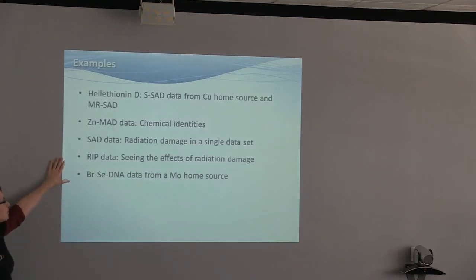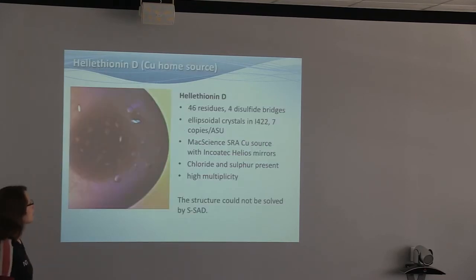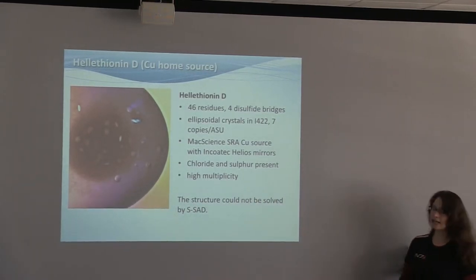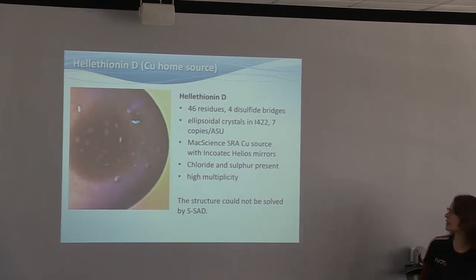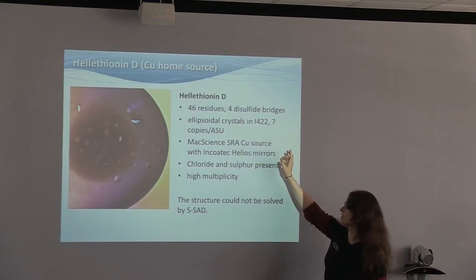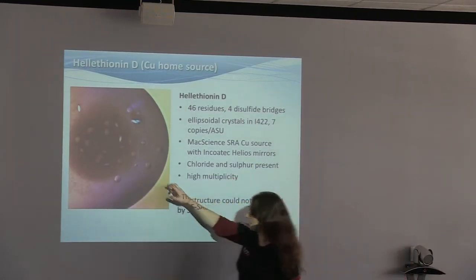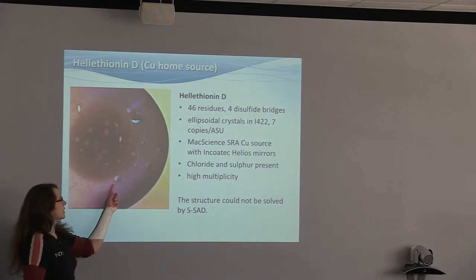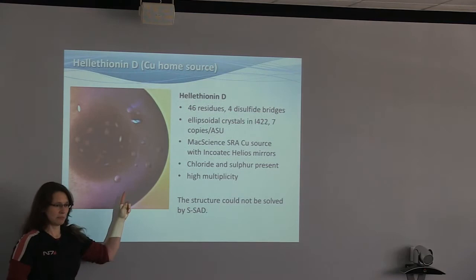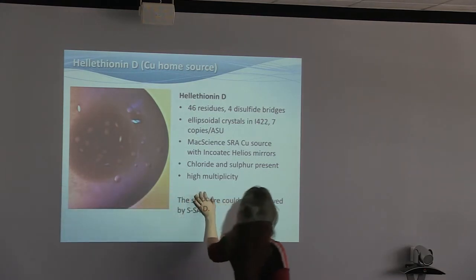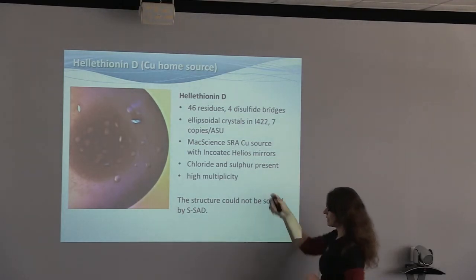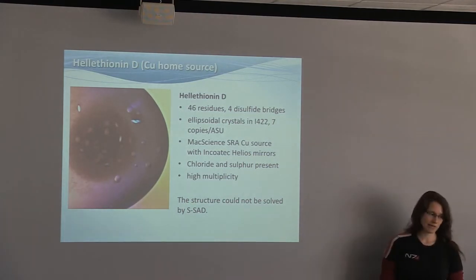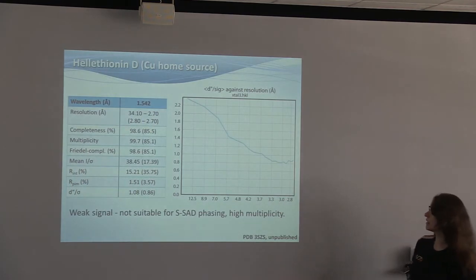Here we go again. And now I'm going to give a few examples of application. First is heliotuning D. It's a structure that is rather old and still unpublished because it can't be phased by experimental phasing alone. It's got 46 residues, four disulfide bridges. The crystals are ellipsoidal. We measured it on the home source with high multiplicity. We also measured at a synchrotron, also to a high multiplicity, but the structure could not be solved by sulfur SAD.